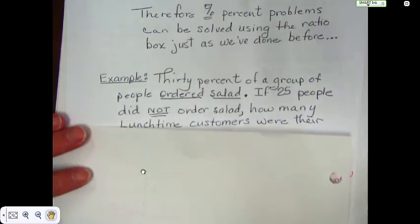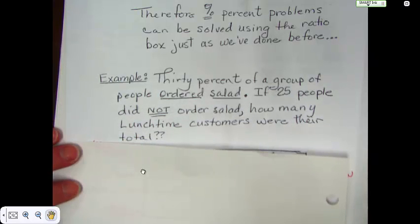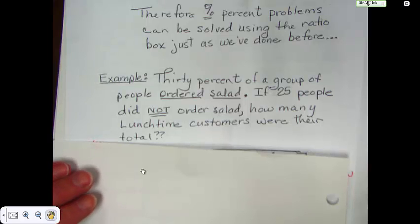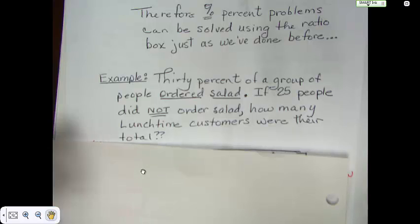Here's an example. If 30% of a group of people ordered salad and 25 people did not order salad, how many lunchtime customers were there total? That means all together salad eaters and non-salad eaters.